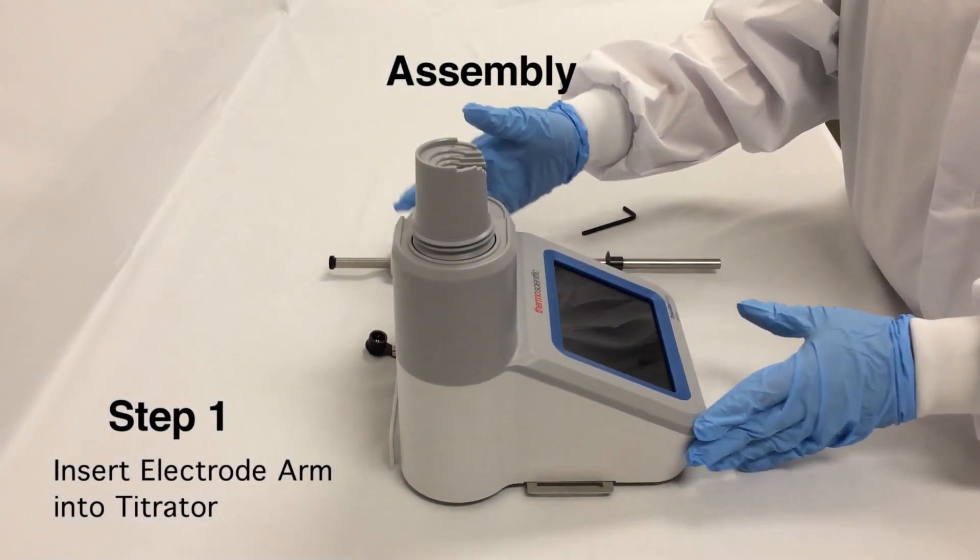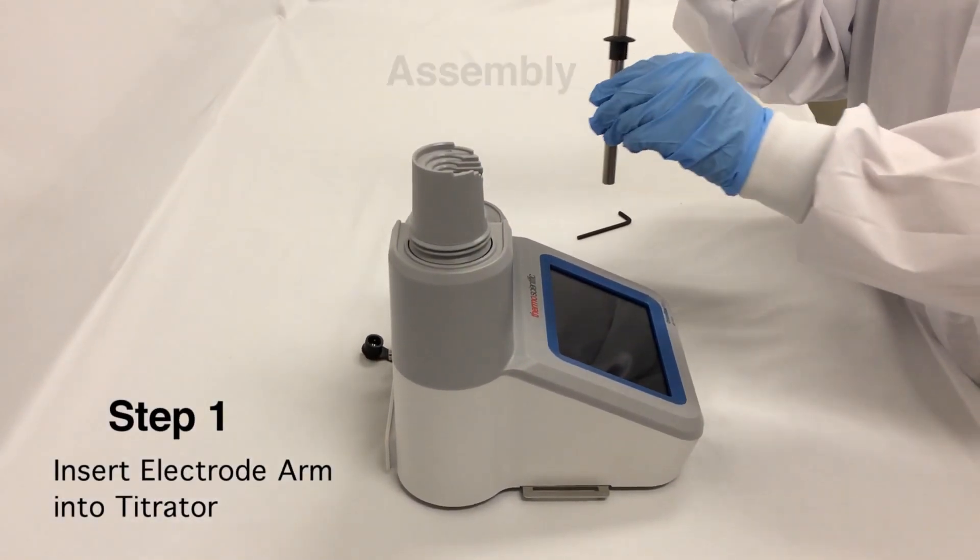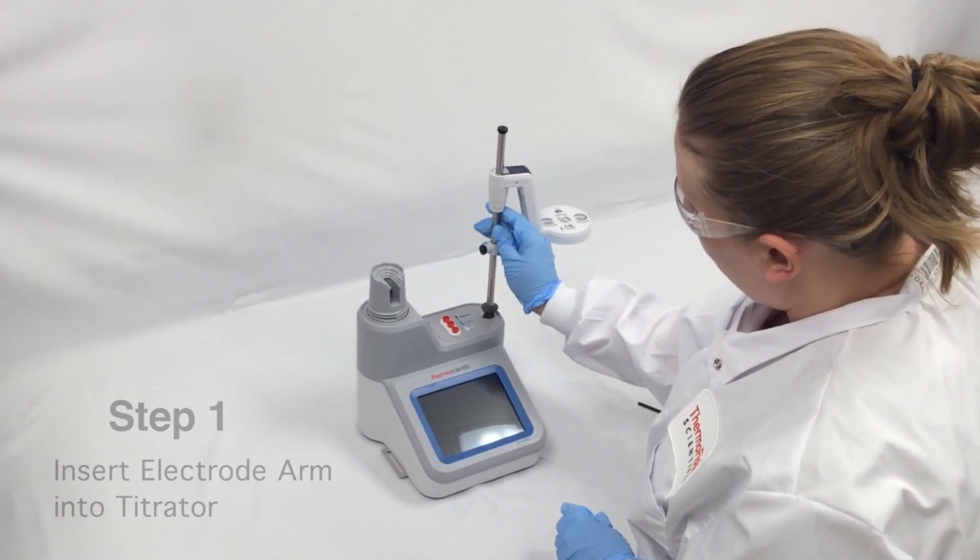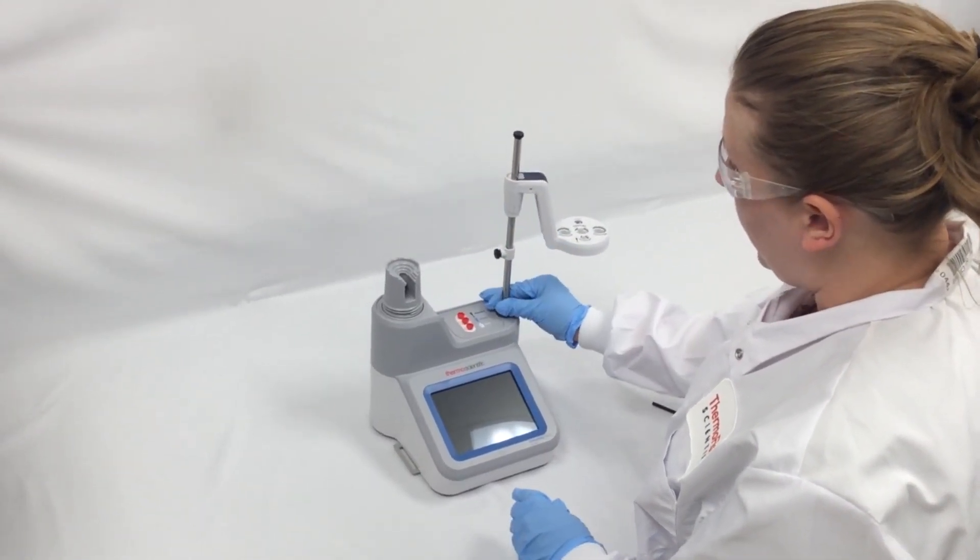The first step in the assembly process is to take the electrode arm and insert it into the titrator, lining up the slots.